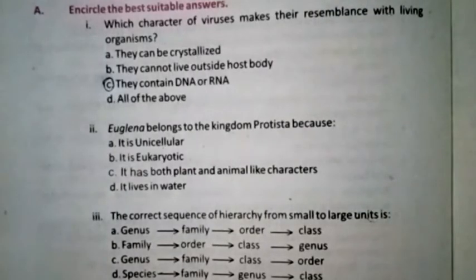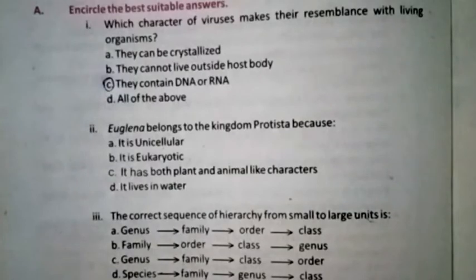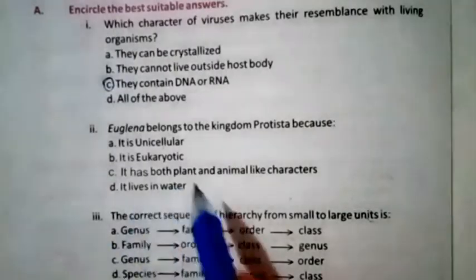Question two: Euglena belongs to kingdom Protista because it is unicellular, it is eukaryotic, it has both plant and animal-like characters, or it lives in water. The right option is C — it has both plant and animal-like characters.